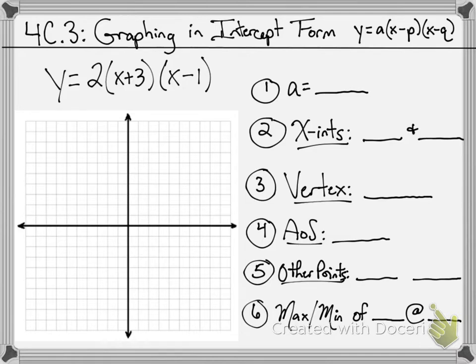The first thing that we're going to do here with this problem is establish what the a value is so we know the shape of the graph and what direction it's pointing. The a value in this case is 2, which means it's going to open upward because it's positive. Because it's an a value with a magnitude greater than 1, this is going to be a narrower graph. Now, since it's written in this intercept form, we are going to focus on finding the x-intercepts first. So I'm circling here in red these two factors.